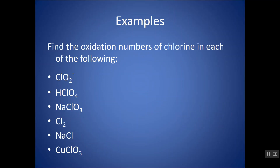You might want to pause and try these examples, then come back to check your work. For the last one — Cu(ClO3) — you might think you have more than one unknown, but you don't. Use the fact that ClO3 is chlorate with a minus one charge, so copper has a plus one charge. Then solve for chlorine within ClO3⁻.